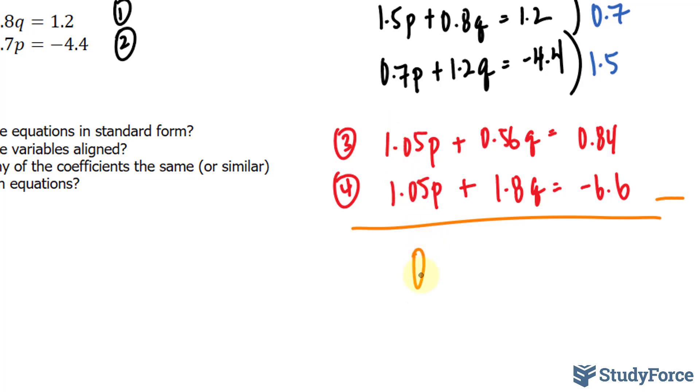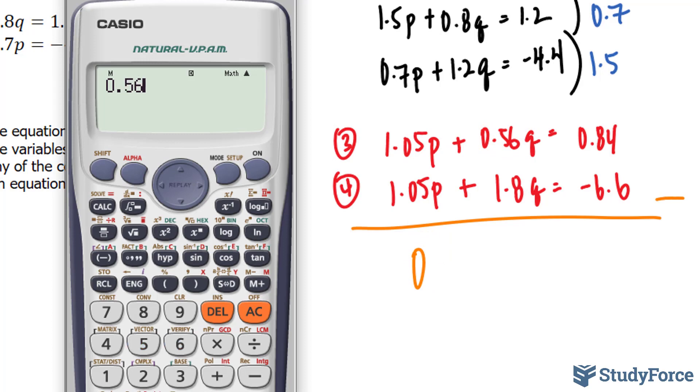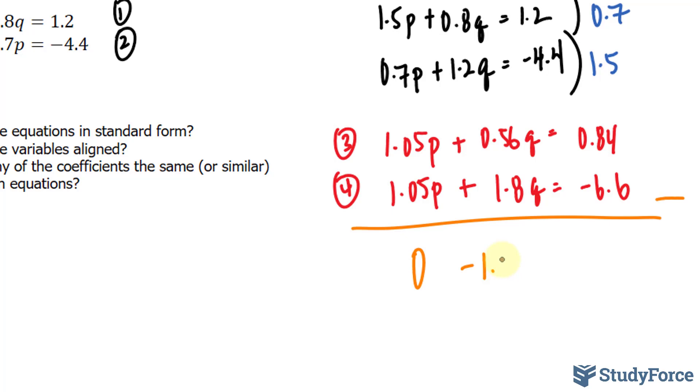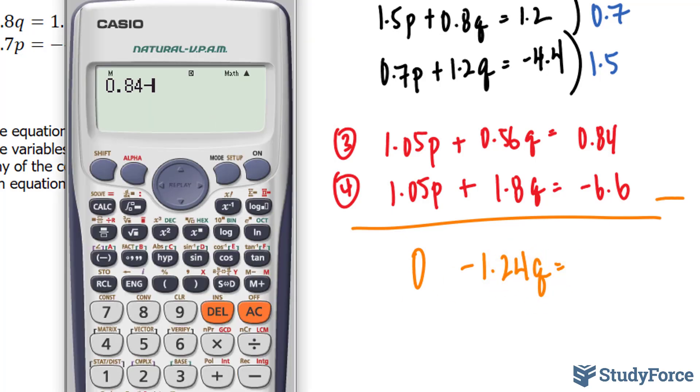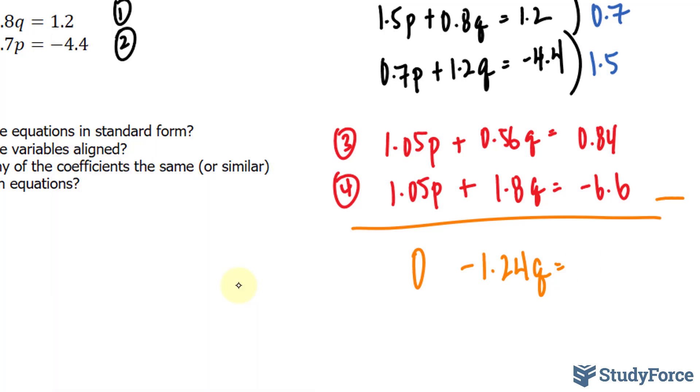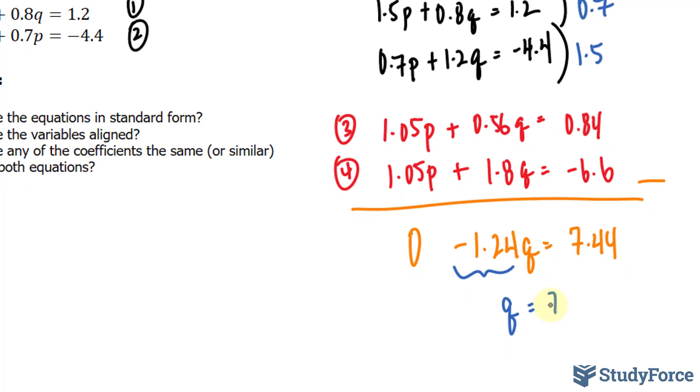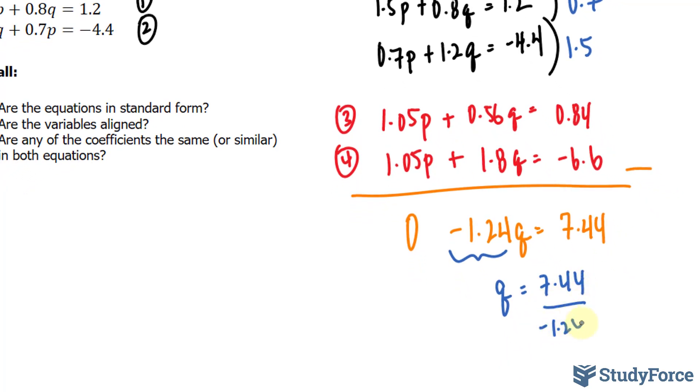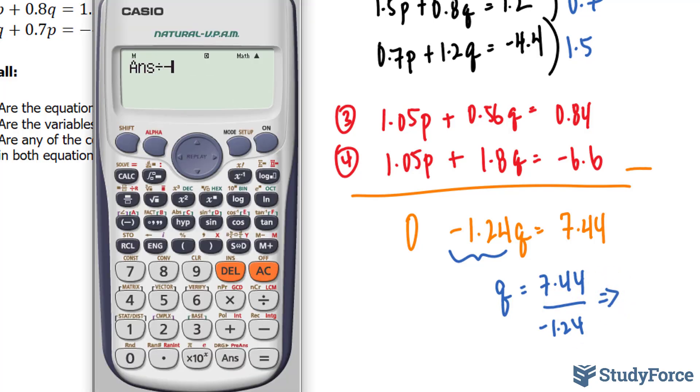The elimination of the variable. So if we subtract in this case, we get 0p. 0.56 take away 1.8 gives negative 1.24q. And 0.84 take away negative 6.6 gives 7.44. And if we divide both sides by this factor to isolate for q, we'll end up with what q is. So 7.44 divided by negative 1.24, and we end up with negative 6.